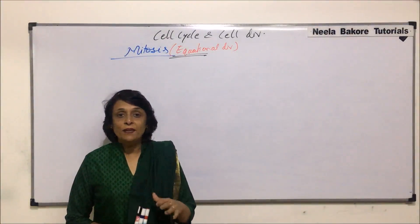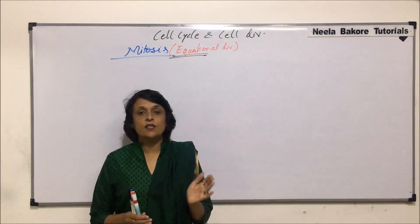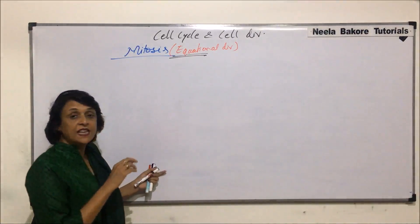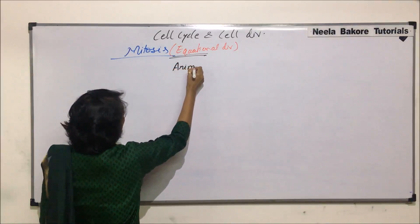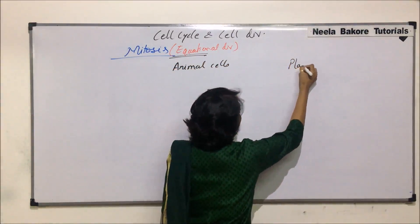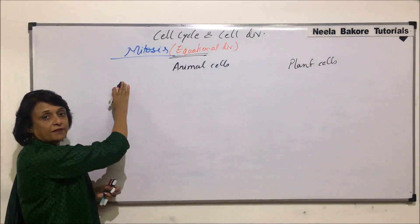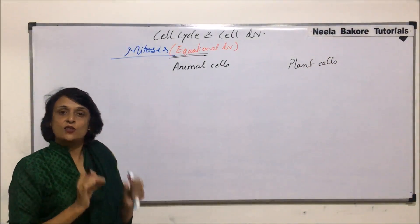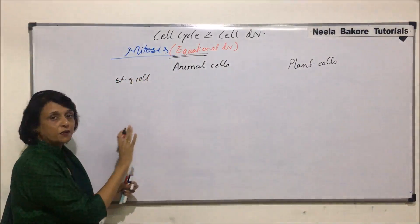After understanding the complete process of mitosis, we will now compare how cell division is different in animal cells and plant cells, taking it stage by stage. We are comparing what happens in animal cells versus plant cells, and the stages we want to compare include the basic structural differences.